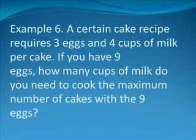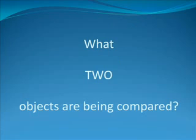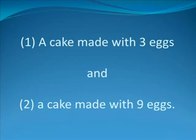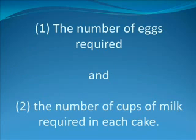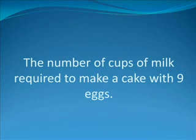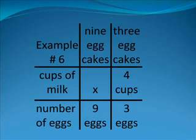Example six. A certain cake recipe requires three eggs and four cups of milk per cake. If you have nine eggs, how many cups of milk do you need to cook the maximum number of cakes with the nine eggs? What objects are being compared? A cake made with three eggs and a cake made with nine eggs. What characteristics are being compared? The number of eggs required and the number of cups of milk required in each cake. What is the unknown? The number of cups of milk required to make a cake with nine eggs. Now, on your screen, you should see how this problem should be set up in tic-tac-toe board format.